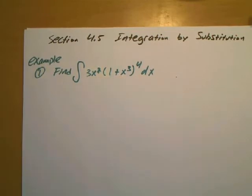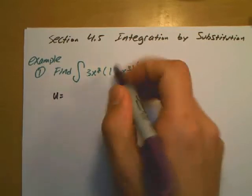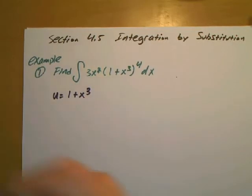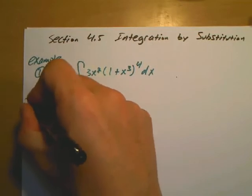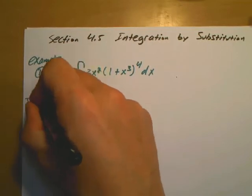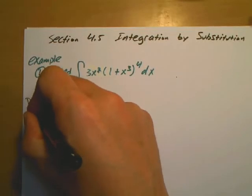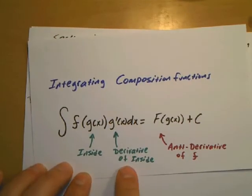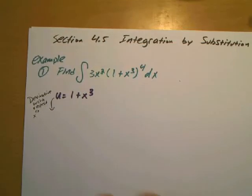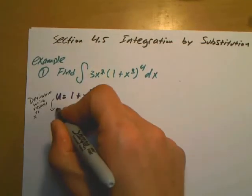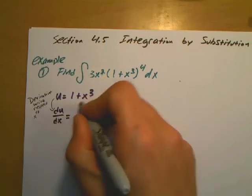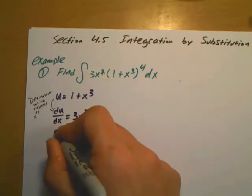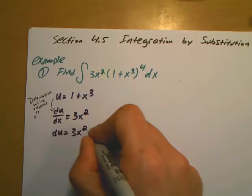I'm going to do a u-substitution, where I let u equal the inside part — so u equals 1 plus x to the 3rd. Next I find the derivative with respect to x. The derivative du/dx is 3x squared, and I cross multiply the dx over, so du equals 3x squared dx.